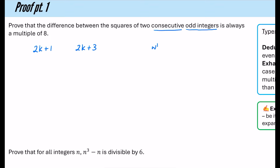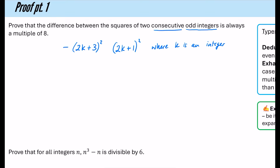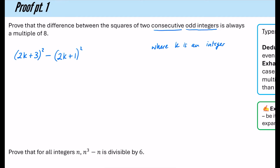Technically we should say these are our odd integers and state that k is an integer. We're trying to find the difference between the squares of these two expressions. I'll square each one. Now if I'm finding the difference, this will be negative because 2k plus 3 is bigger than 2k plus 1, so I'm going to write it the other way around — taking the larger square and subtracting the smaller — and hopefully arrive at a multiple of 8.